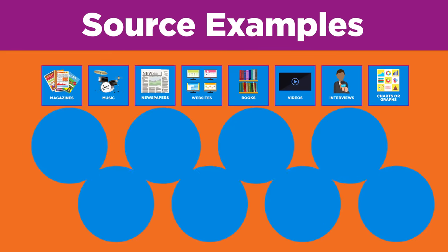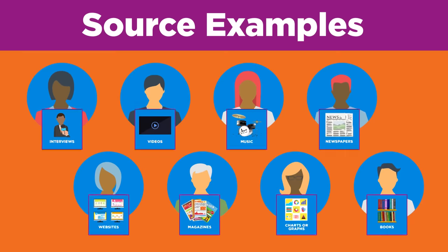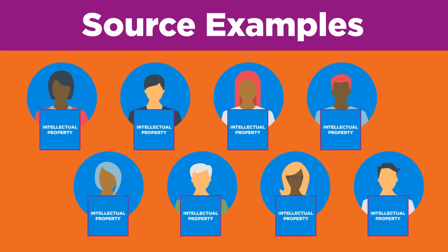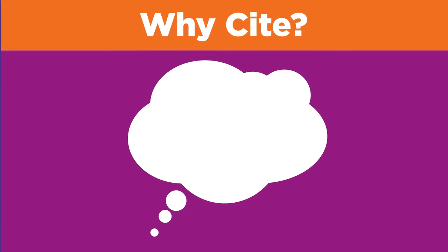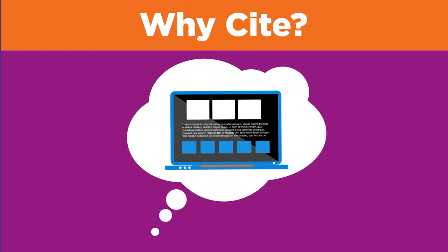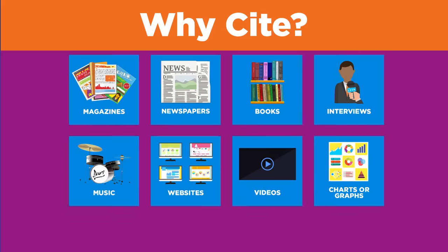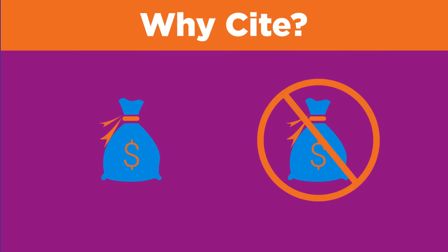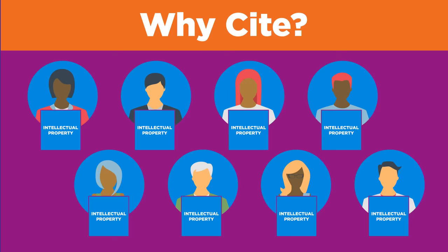All of these sources were created by someone. Each work belongs to the person who created it — the work is that person's intellectual property. You may be thinking: I found this on the internet, it was free, why do I need to cite it? Remember, it does not matter where you got the information or if you paid for it. It does matter that you're using someone else's intellectual property. That's why you always have to document your sources.